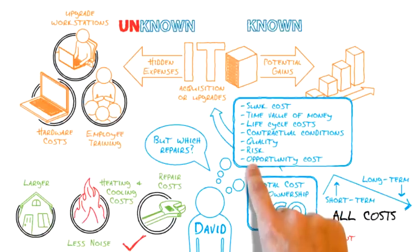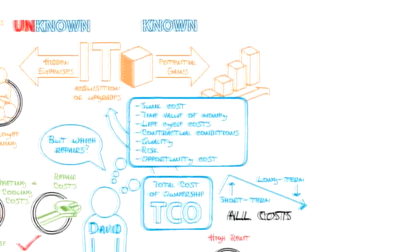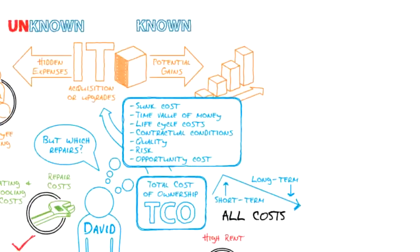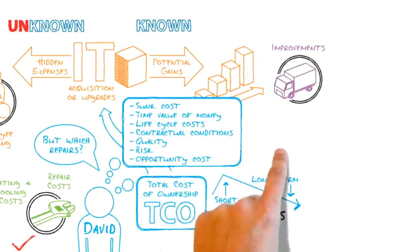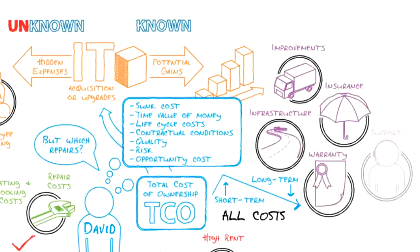Opportunity costs: by buying one house, he is not buying another that might be better. While TCO appears most often in IT considerations, most planning and acquisitions can benefit from a TCO analysis, including vehicle or building improvements, infrastructure, insurance, warranty, maintenance, training, or audit costs, as well as selection of vendors for on-site or off-site support.